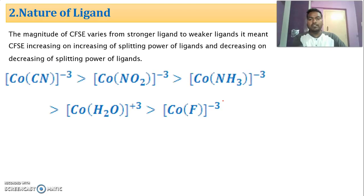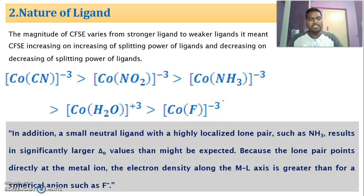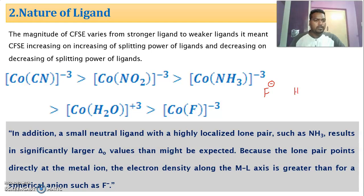Another important aspect of the nature of ligand is the distinction between strong and weak ligands observed in the spectrochemical series. In the presence of a strong ligand, the crystal field stabilization energy will be more. Whether a ligand is strong or not is judged based on the spectrochemical series. An interesting point: F⁻ is a weaker ligand than water, even though water is neutral. Why does this happen? I will discuss this in the next video.